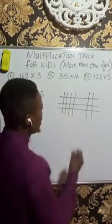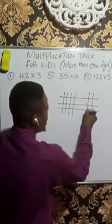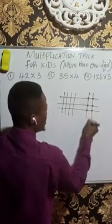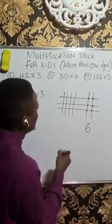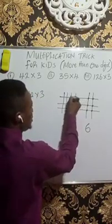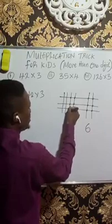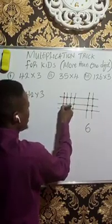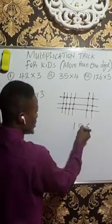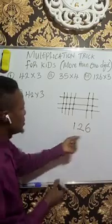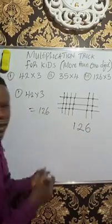Now let us check the point of intersection. We have here 1, 2, 3, 4, 5, and 6. So here we have 6. Coming to this side, we have 1, 2, 3, 4, 5, 6, 7, 8, 9, 10, 11, and 12. So we write 12. You can now see that 42 times 3 is equivalent to 126.